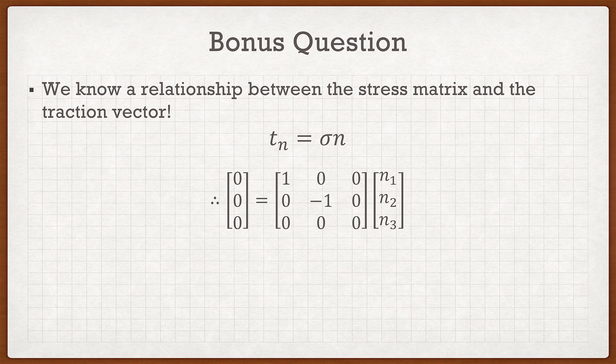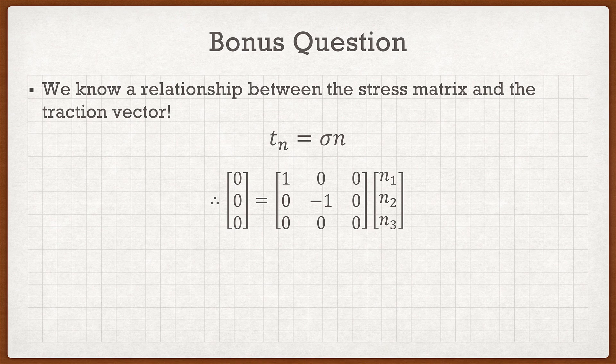To do that, all we have to do is solve this equation for n₁, n₂, and n₃. It's very simple because we have three equations and three unknowns. But if you just look at this, it's very easy to tell that n₁ and n₂ must be 0, and n₃ could be absolutely anything.